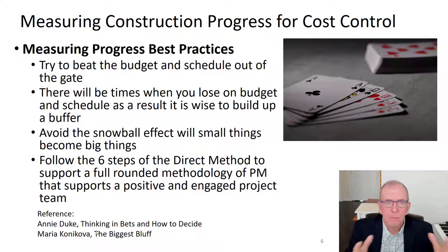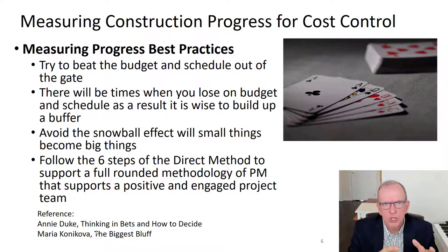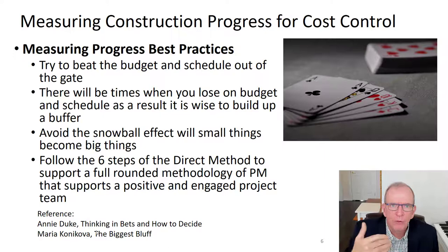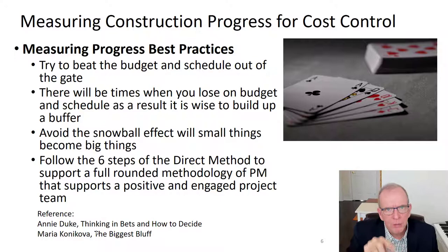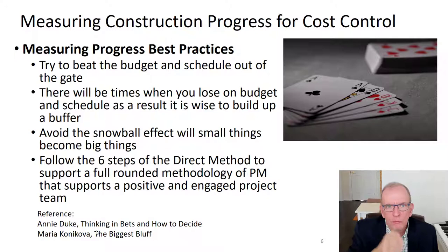We had a plan, took our estimate, converted it into a budget. Now we have line items to monitor and can see what actually executes and how well. We can learn whether a problem was in the estimate, the execution, the subcontractor, or the communication. That gives us a feedback loop to improve, especially if there's more of that work coming up in the project. This is where project management tools and techniques really come into effect.